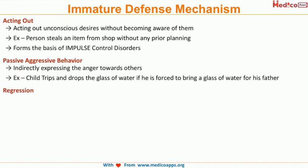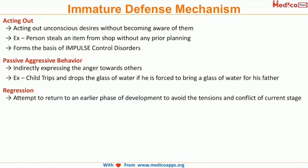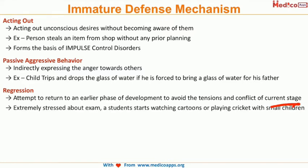Another important immature defense mechanism is regression. Here, the attempt is to return to an earlier phase of development to avoid tension and conflict of the current stage. For example, if a student is completely stressed about his examination, rather than going to study he will start watching cartoons or playing cricket with small children. This is regression, and it is important in the development of neurosis.